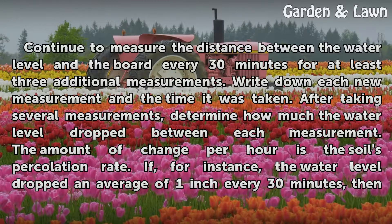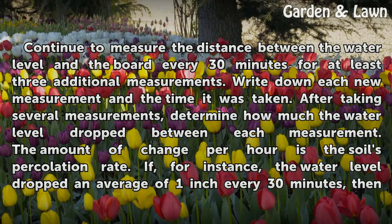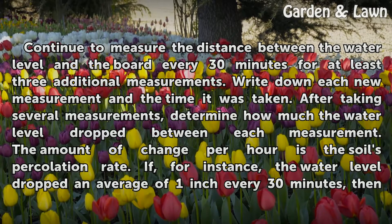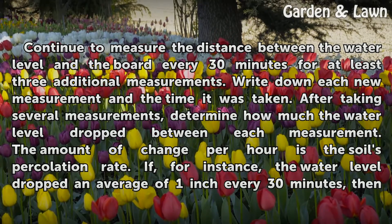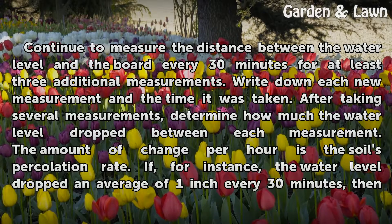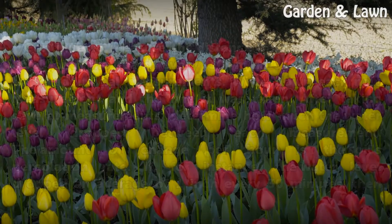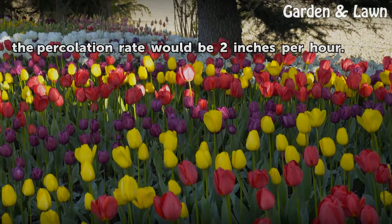Step 6: Repeat measurements. After taking several measurements, determine how much the water level dropped between each measurement. The amount of change per hour is the soil's percolation rate. For instance, if the water level dropped an average of 1 inch every 30 minutes, then the percolation rate would be 2 inches per hour.